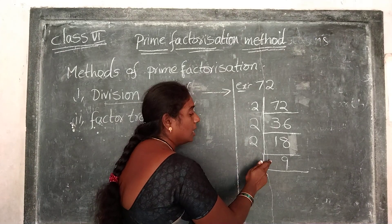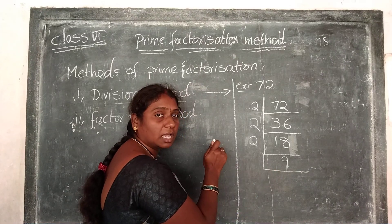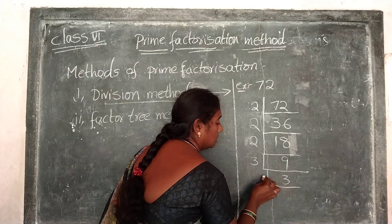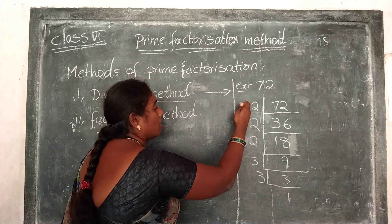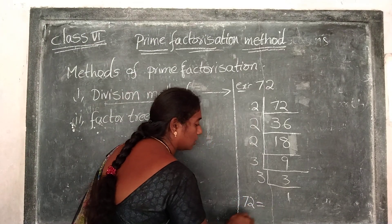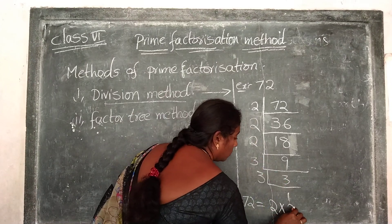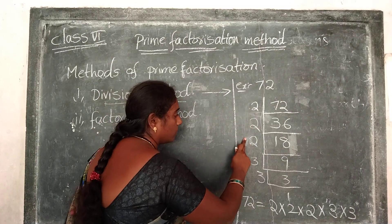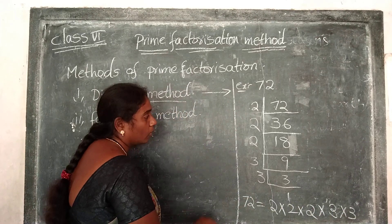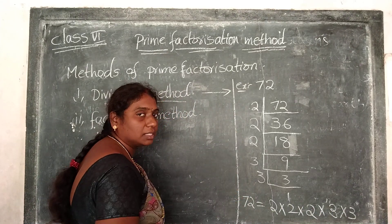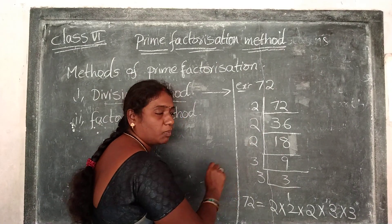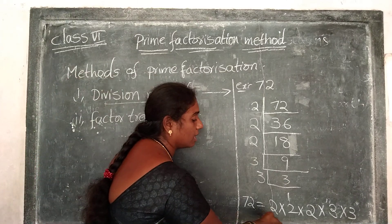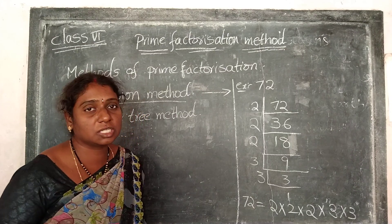Now what is the next prime number? 3. Go and take 3. Is 9 divisible by 3? Yes, it is divisible by 3 — 3 times 3 is 9. Again 3: 3 divided by 3 is 1. So these are all the prime factors. Write down: 72 = 2 × 2 × 2 × 3 × 3. Check — 2 is a prime number, 2 is a prime number, 2 is a prime number, 3 is also a prime number, 3 is also a prime number. So at the end of the process we get all prime numbers as factors. This is called prime factorization using division method.